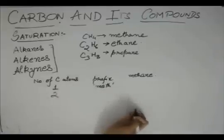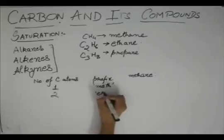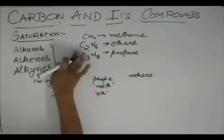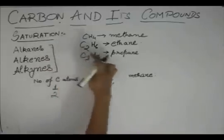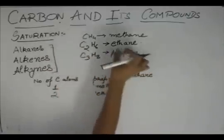If the number of carbon atoms is two, then the prefix is ETH. So, it's an alkane and it has two carbon atoms, so it is ETHANE.